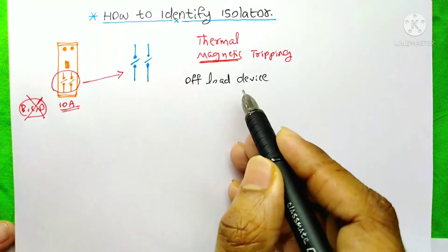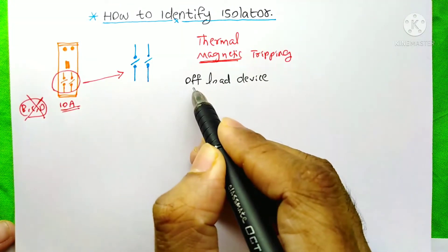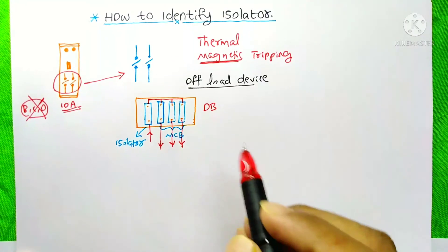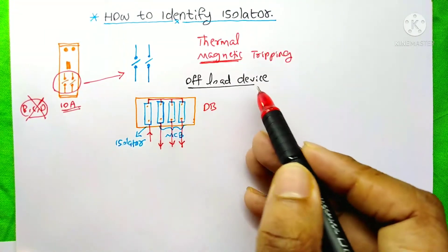And you can also say this isolator is an off-load device. And why you can say it is an off-load device?